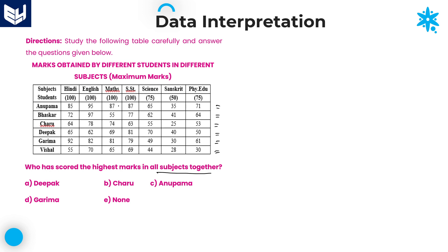Anupama's total comes to 526 marks. As the option contains 'none of these,' you need to check each and every option. Here 'none of these' is not given, so I'm checking all values. Baskar's total is 468. Charu's total is 412.